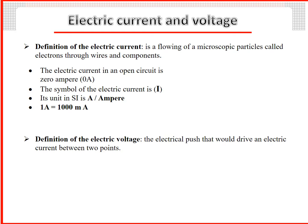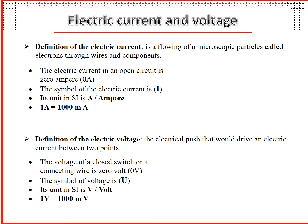Definition of electric voltage: the electrical push that would drive an electric current between two points. The voltage of a closed switch or connecting wire is zero volt. The symbol of voltage is U. Its unit in SI is V (volt). 1V = 1000 mV.